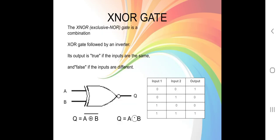Now we move on to the XNOR gate. The XNOR, or exclusive NOR gate, is a combination of XOR gate followed by an inverter. Its output is true if the inputs are the same, and false if the inputs are different. So if both inputs are zero, the output becomes one. If either one input is one, the output becomes zero. The truth table: input 0 0 gives output 1, input 0 1 gives output 0, input 1 0 gives output 0, both inputs true gives output true.